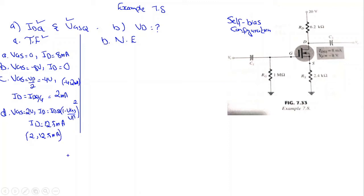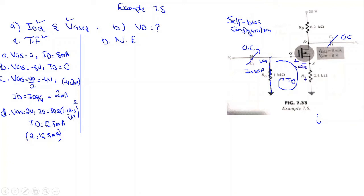Now we derive the network equation. For DC analysis we open-circuit the capacitors. Since IG = 0, the voltage drop across the gate resistor is zero, so VG = 0. Applying KVL, the drain current flows through RS creating a drop, giving: VGS + ID·RS = 0, which simplifies to VGS = −ID·RS.